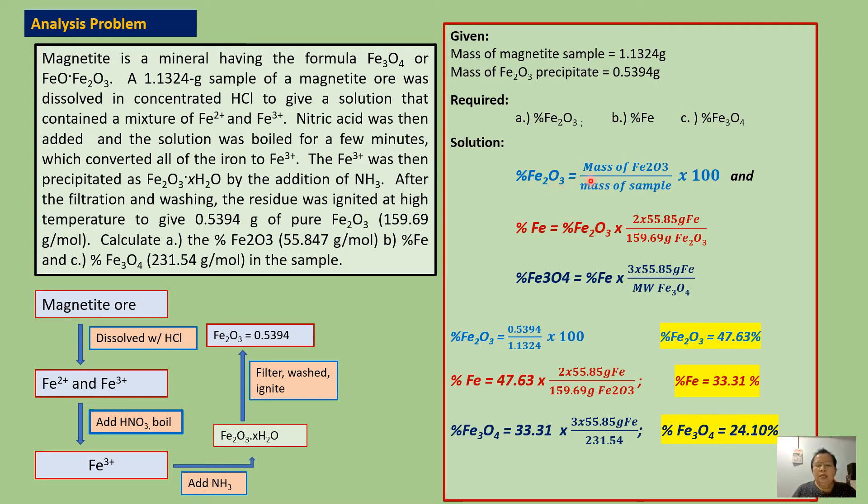To solve for percent Fe2O3, we can solve this immediately because the mass of Fe2O3 is already given. So percent Fe2O3 is simply mass of Fe2O3 divided by mass of sample times 100. To solve for percent iron, we are going to use this percent Fe2O3. So percent iron equals percent of Fe2O3 times this factor.